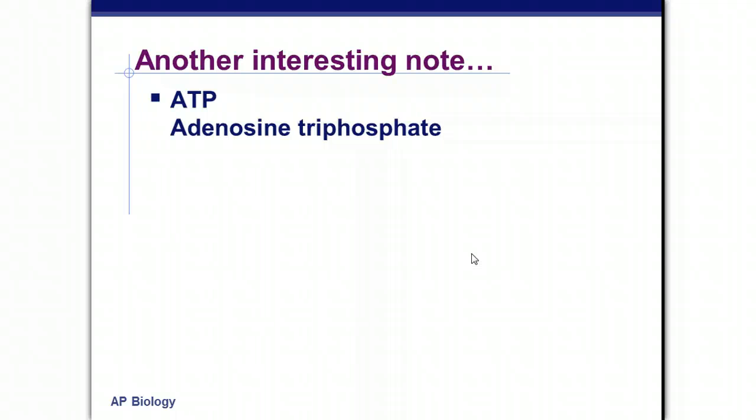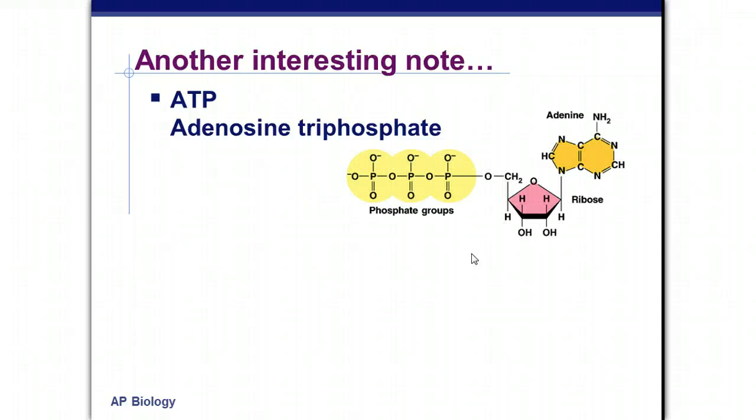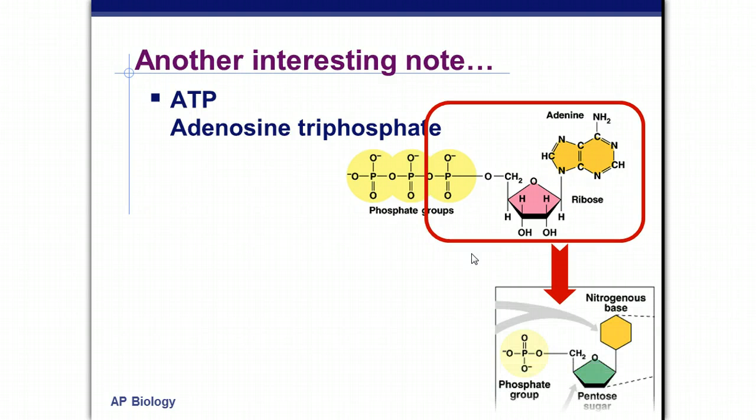Another interesting note is that adenosine triphosphate, ATP, our energy carrier, is a, check that out, nucleotide, right? Here you have your pentose sugar, your 5-carbon sugar, your phosphate group, and adenine, your nitrogenous base. And it is a triphosphate, it does have three phosphate groups on there, so we do call it a modified nucleotide. So it's AMP adenine with plus two more phosphate groups.